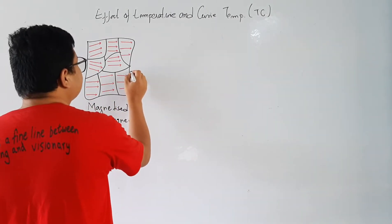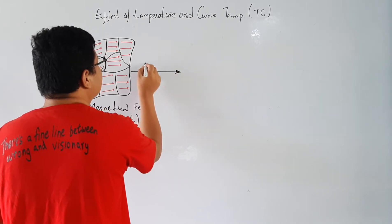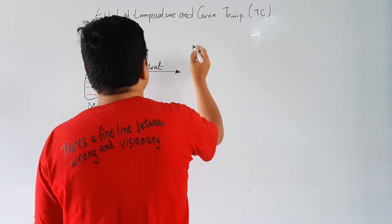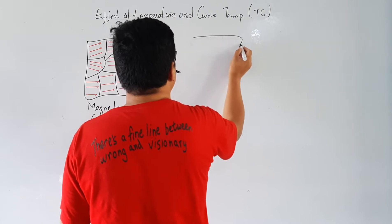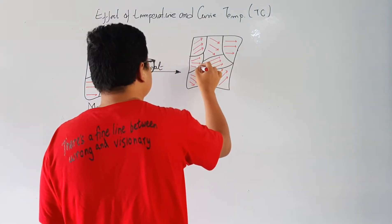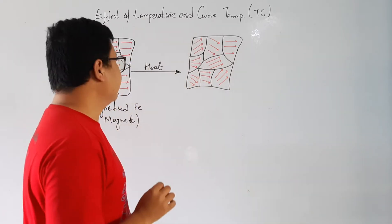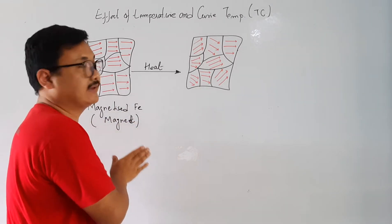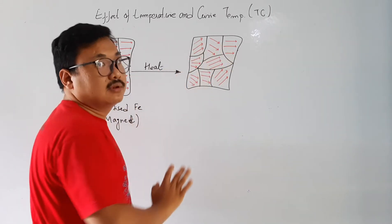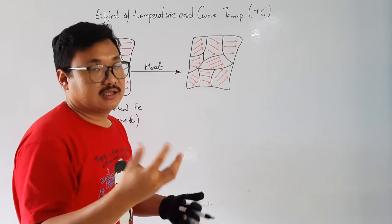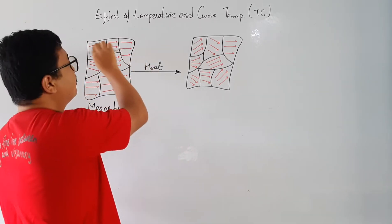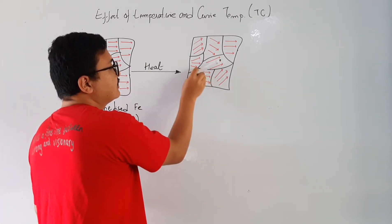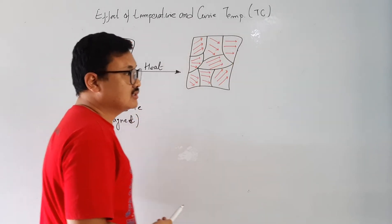So now let us heat this material. Whenever we heat this ferromagnetic material or magnet, the direction of the dipole movements will change randomly. For example, it was like this — all the dipole movements were in the same direction — but here they are going in different directions, changed randomly. Why?